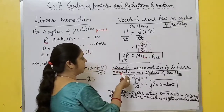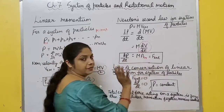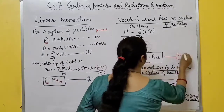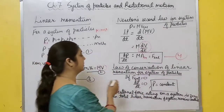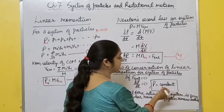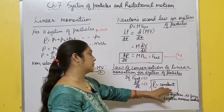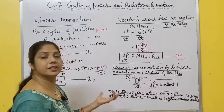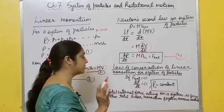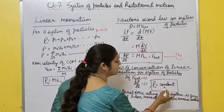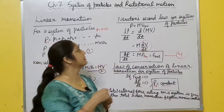Conservation of linear momentum for a system of particles: we know dP/dt = F_external. If F_external = 0, then dP/dt = 0, meaning P is constant. So total linear momentum of the system remains constant. This is the law of conservation of linear momentum: if total external force acting on a system is 0, total linear momentum also remains constant. Center of mass topic is complete. Next we discuss rotational motion.